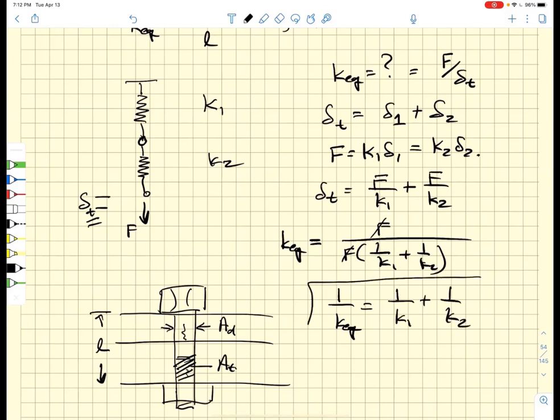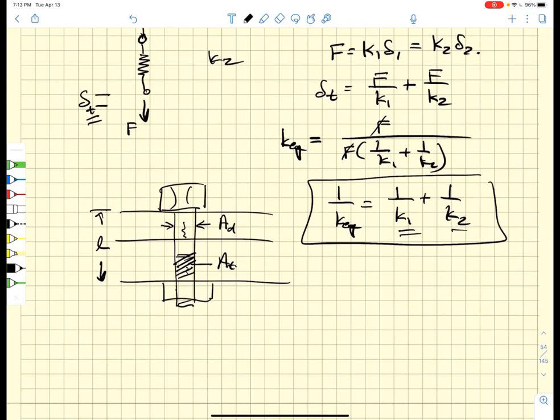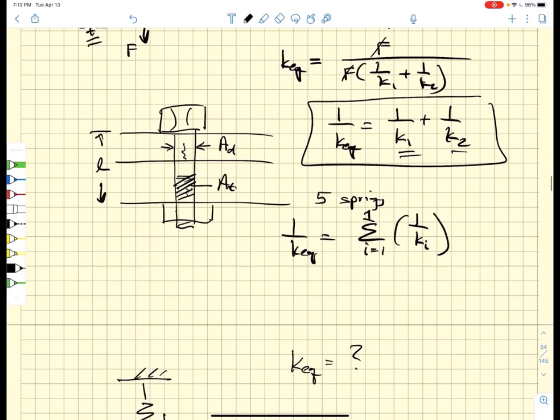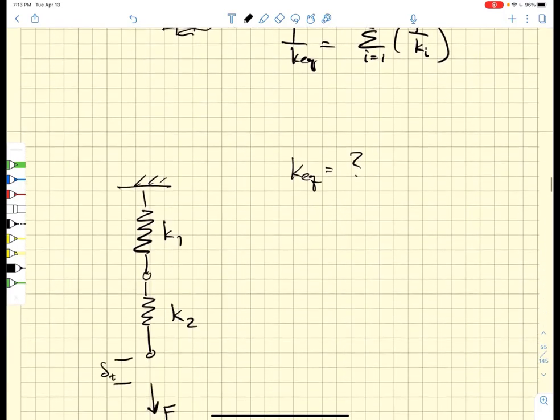If we have five springs, then one over K equivalent is equal to the sum of i equal one to five of one over Ki. Life is pretty simple if we can figure out what the equivalent spring constants are, and that's our task when it comes to bolted members.